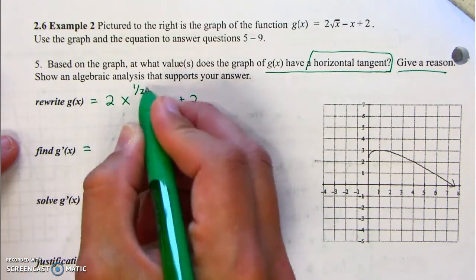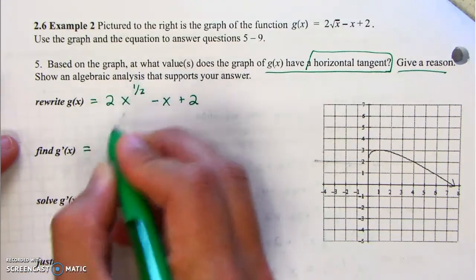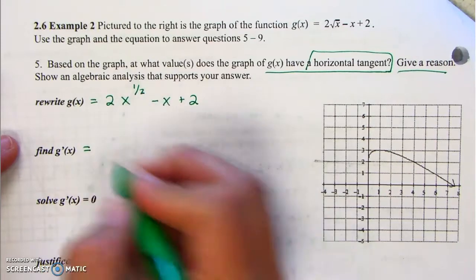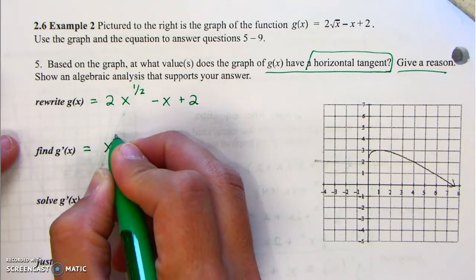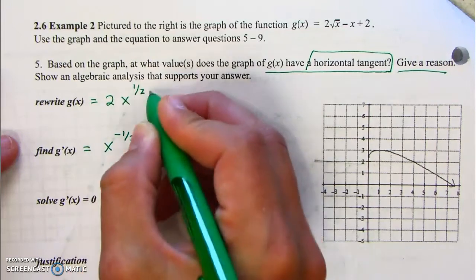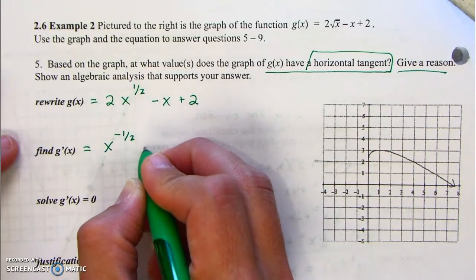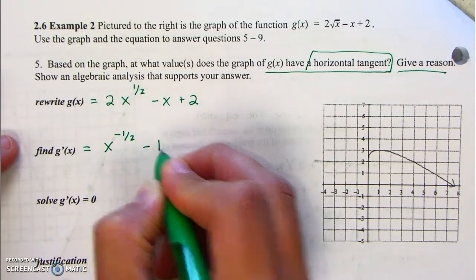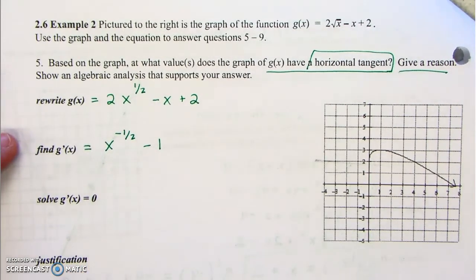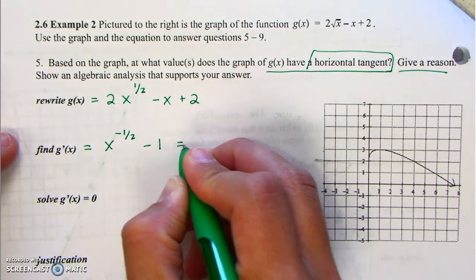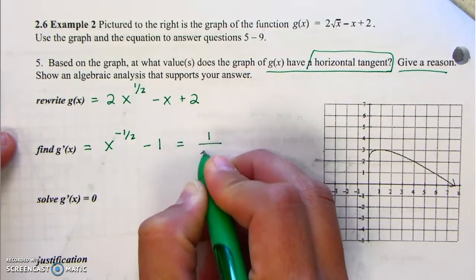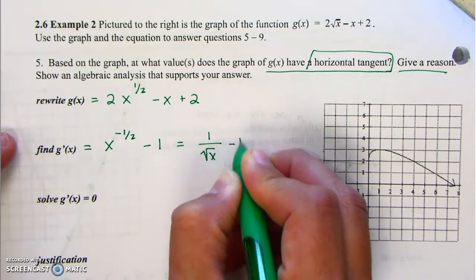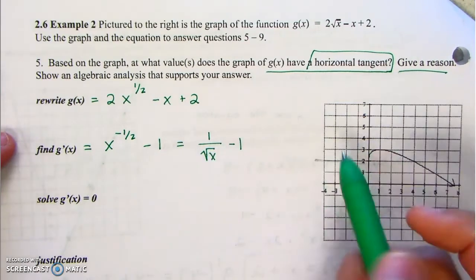g prime: 1 half times 2 — those divide out — and we get x to the negative 1 half, because you subtract 1. That's our derivative. Should we rewrite it? Yes. It's going to be 1 over the square root of x minus 1.